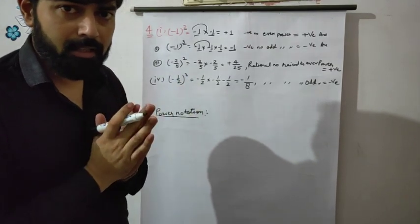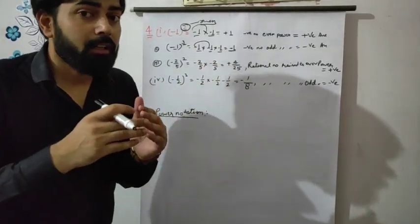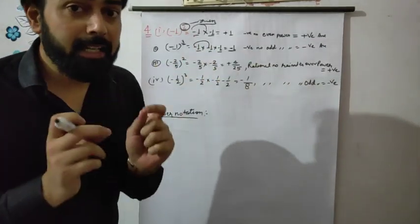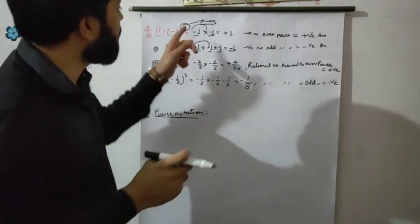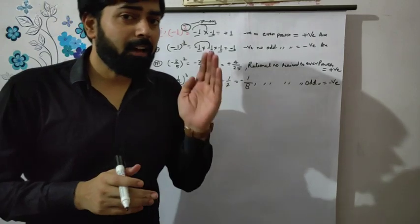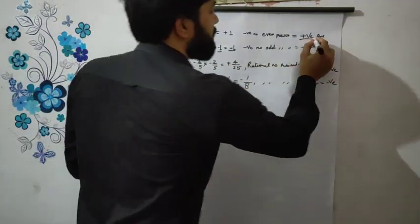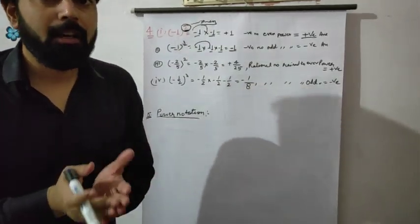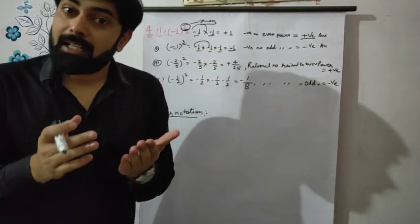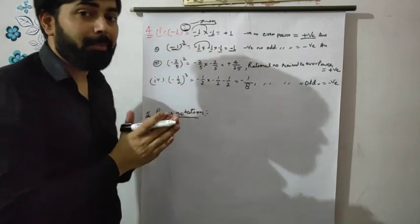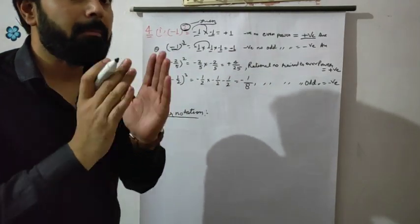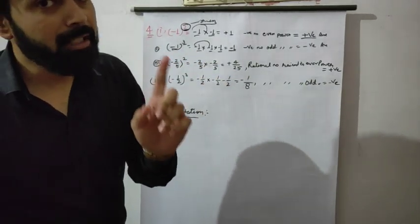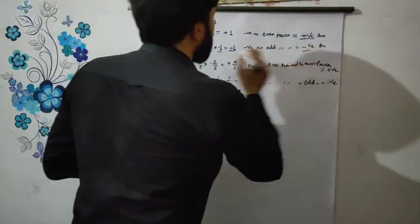After observation, what do we get? If any negative number is raised to an even power, then the answer will be positive. Here 2 is an even number — any number divisible by 2 is an even number. If any negative number is raised to an odd power, the answer will always be negative.